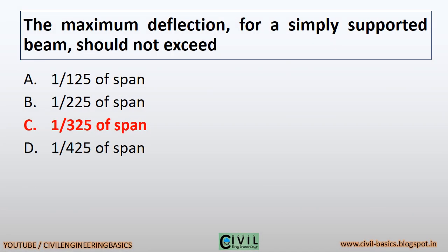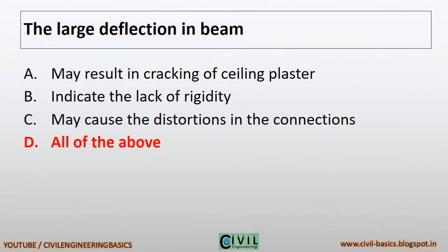The maximum deflection for a simply supported beam should not exceed 1/325 of span. Large deflection in a beam may result in cracking of ceiling plaster, indicate lack of rigidity, and may cause distortions in the connections — all of the above will result due to large deflection in a beam.